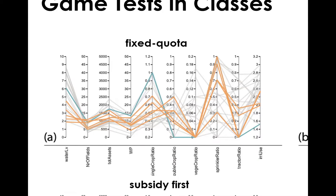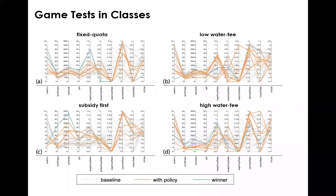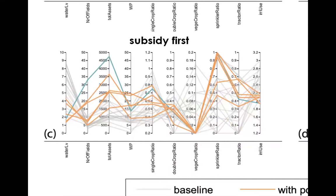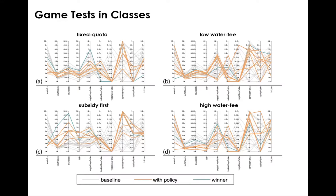For example, for the fixed quota, the winning player had a high single crop ratio, irrigation water use around 1.6, and relatively high water productivity — but the total money this winner gets is not much better than the rest of the players. But for the upfront subsidy policy group, this player did much better, and overall all players did much better. The reason is that with the subsidy first approach, we give credits to players so they can make some early investment, which boosts their production later on. From these results we gain insights about player strategy, which might help inform policy design in reality.